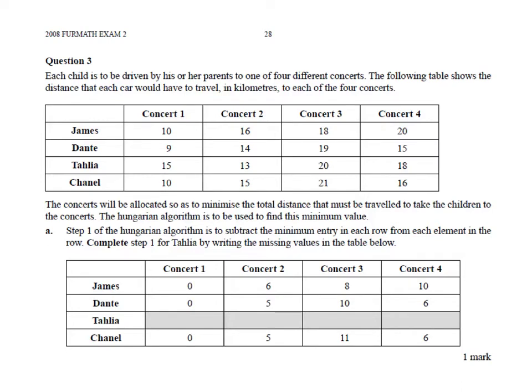The concerts will be allocated to minimize the total distance that must be traveled to take the children to the concerts. The Hungarian algorithm is to be used to find this minimum value. Step one of the Hungarian algorithm is to subtract the minimum entry in each row from each element in the row. Complete the step for Talia by writing the missing values in the table.